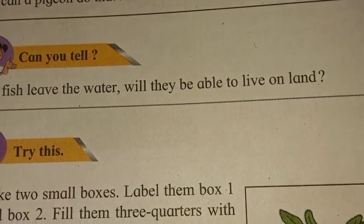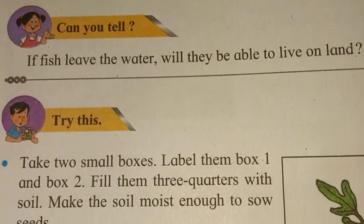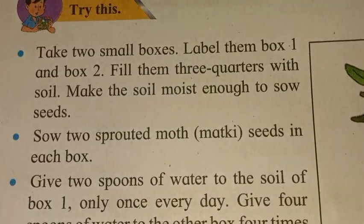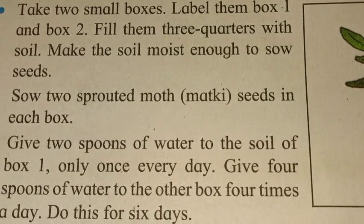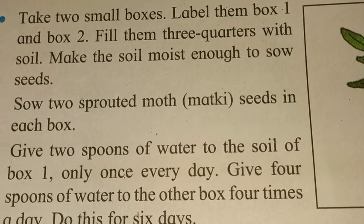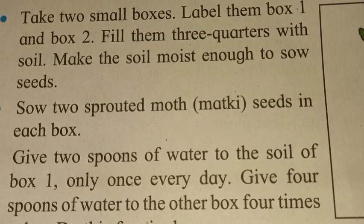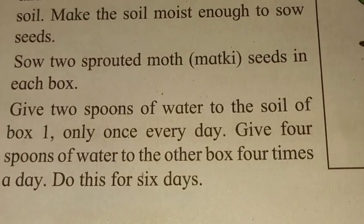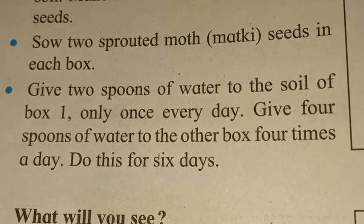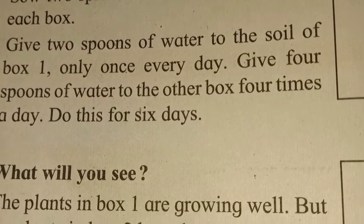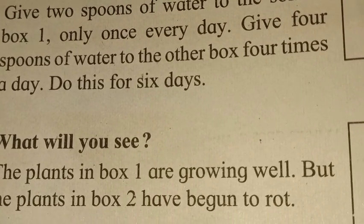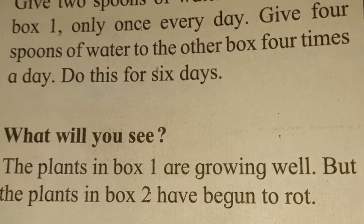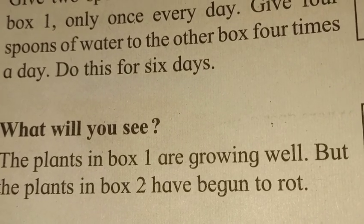Try this activity: take two small boxes, label them Box 1 and Box 2. Fill them three-quarters with soil. Make the soil moist enough to sow the seed. Sow two sprouted moth (matki) seeds in each box. Give two spoons of water to Box 1 once every day, and give four spoons of water to Box 2 four times a day. Do this for six days.